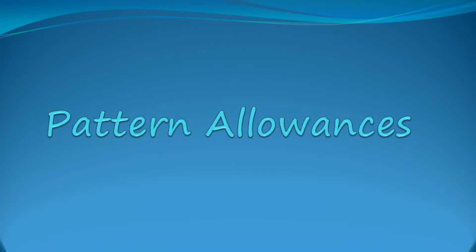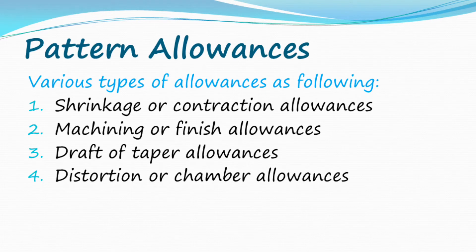In this video we learn about the types of pattern allowances. The various types of allowances are: shrinkage or contraction allowance, machining or finish allowance, draft or taper allowance, and distortion or camber allowance.